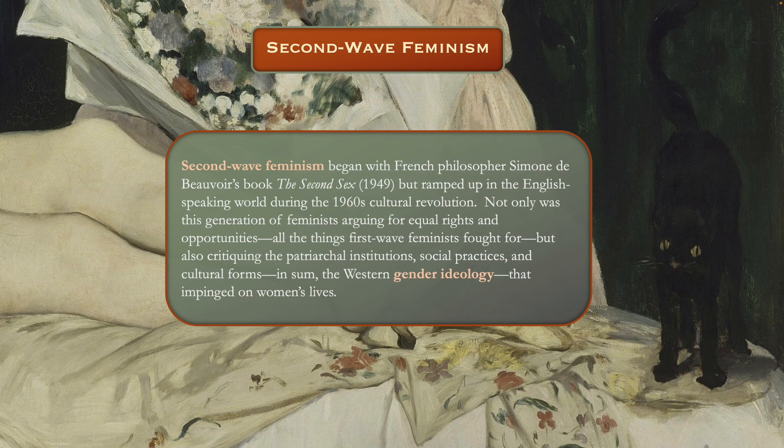Betty Friedan's book came out in 1963 — we'll look at that in just a minute. Not only was this generation of feminists arguing for equal rights and opportunities — all the things that first wave feminists fought for — but also, and this is the important distinction, they were critiquing the patriarchal institutions, social practices, and cultural forms, essentially the entire Western gender ideology that impinged on women's lives.